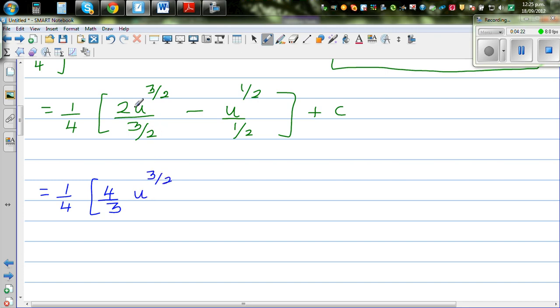This 2 goes up and minus 2u to the power half plus c. So let me expand with this 4, so this becomes 1 third. So 1 quarter times 4 thirds will become 1 third, u to the power 3 halves. And 2 times 1 quarter is a half. So minus 1 half times u to the power half plus c.